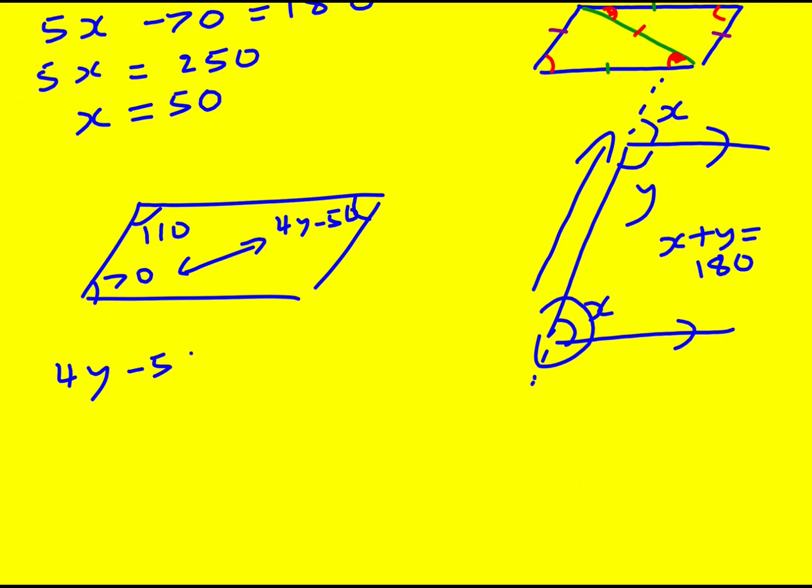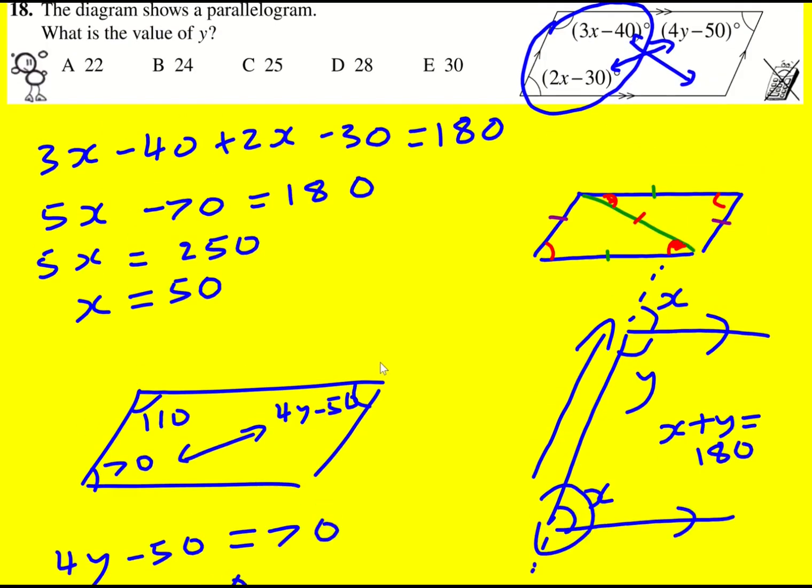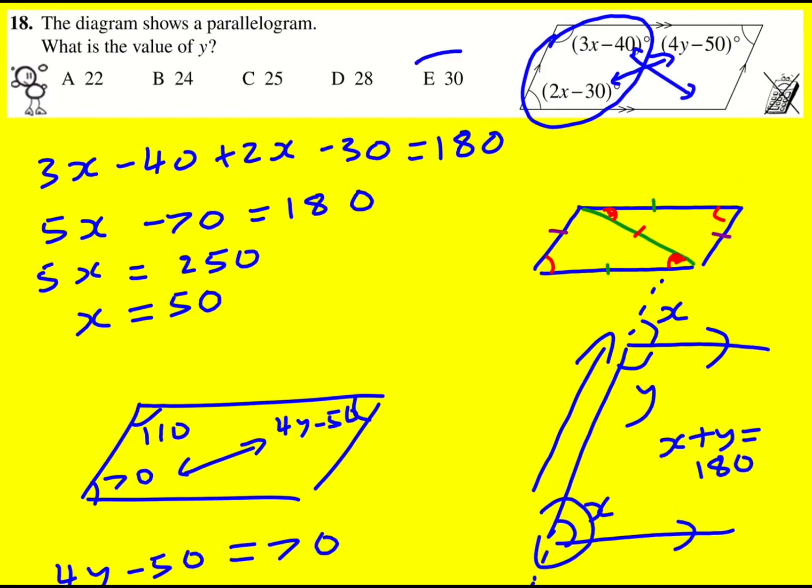4y minus 50 must equal 70. That's going to give me 4y is 120 and therefore y is 30. So quite a lot of work to be done using angle facts. Yeah, feels quite good at the end. y is equal to 30.